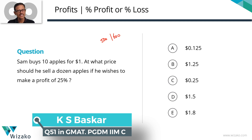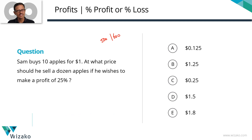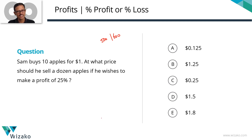Why this quandary? This question is conceptually a very simple question. But for a question of this ease, the proportion of students who got this question incorrect ended up being more than what would have been justified for a question of this level of difficulty.